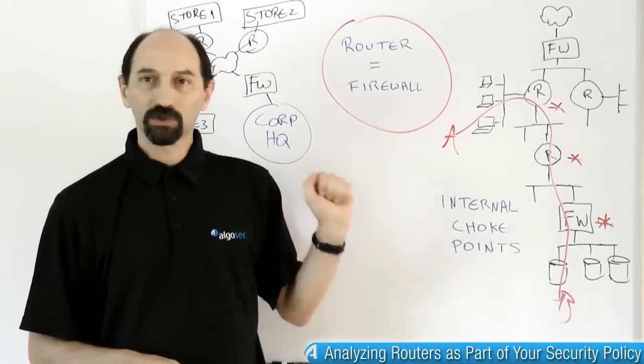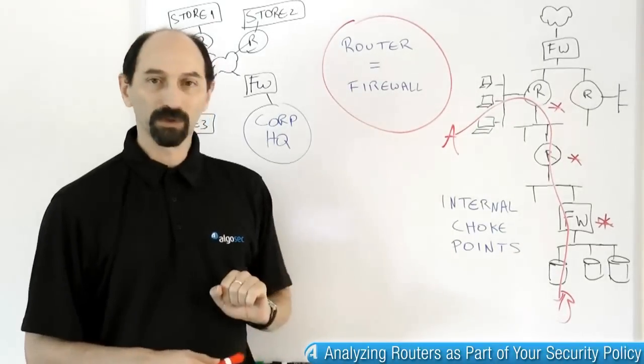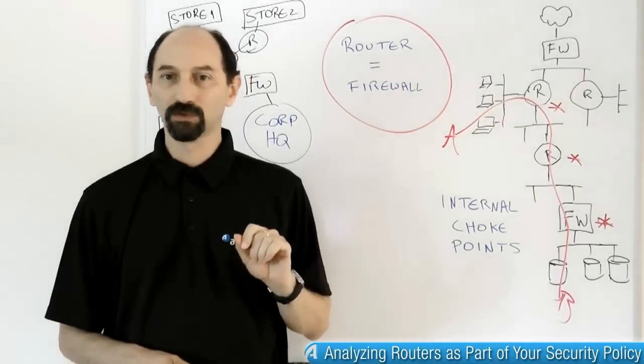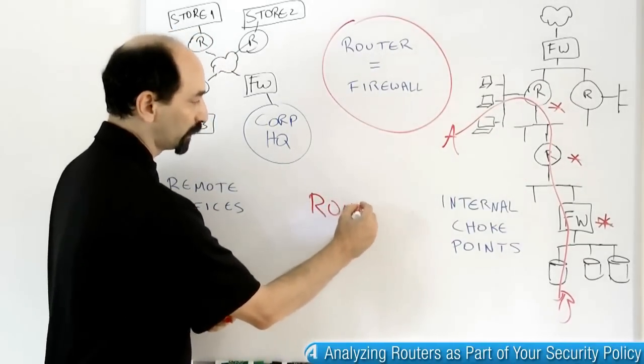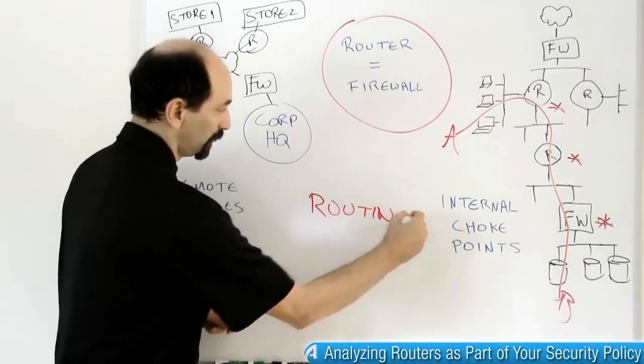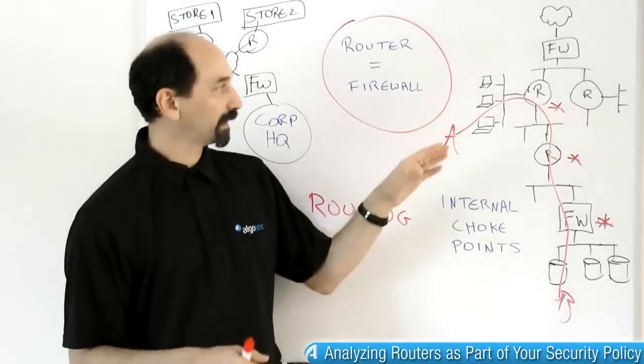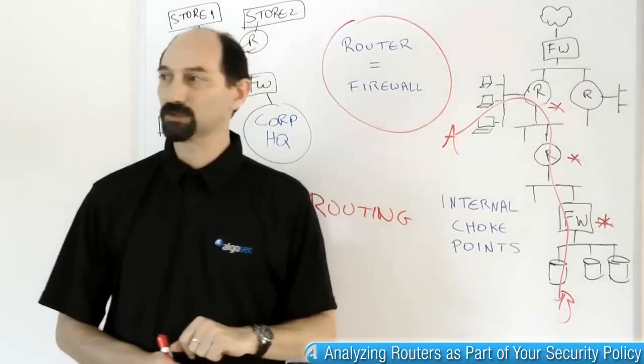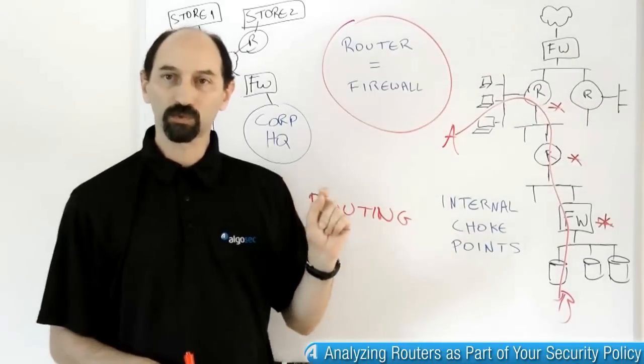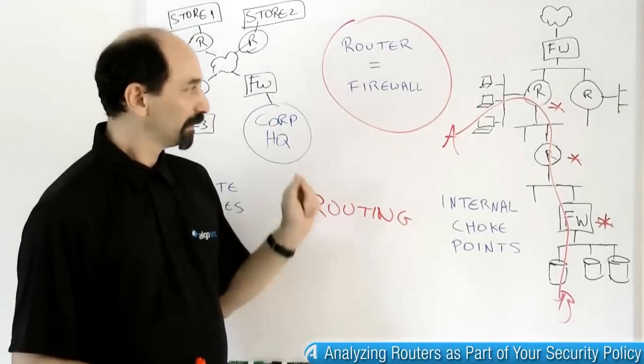So when you're making a change to the security policy and you're touching these routers, you really need to do two things. You need to modify or check their routing, just to make sure that traffic actually is sent from the first router to the second router to the firewall to the device you need to reach. So you need to make sure that the routing is done correctly.